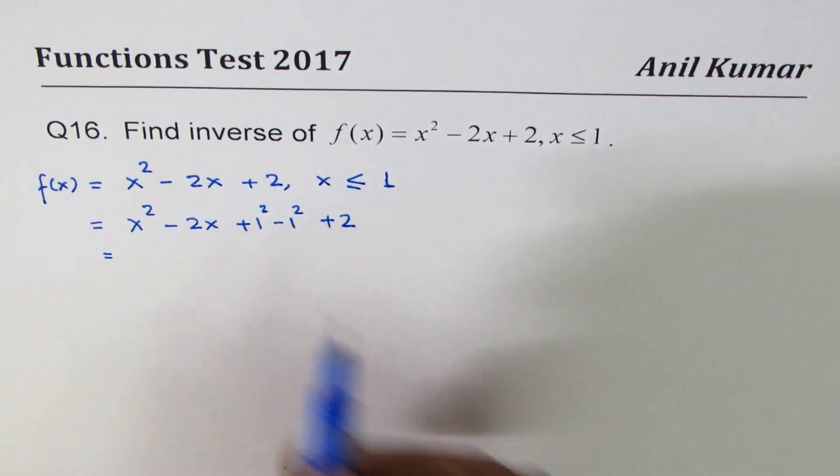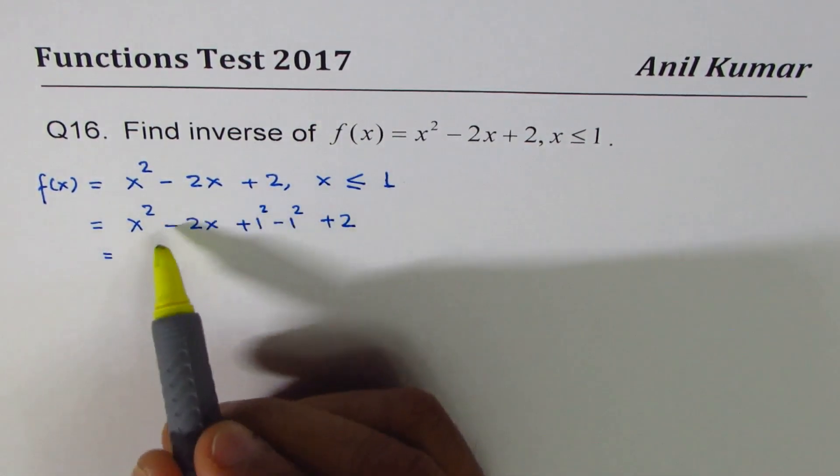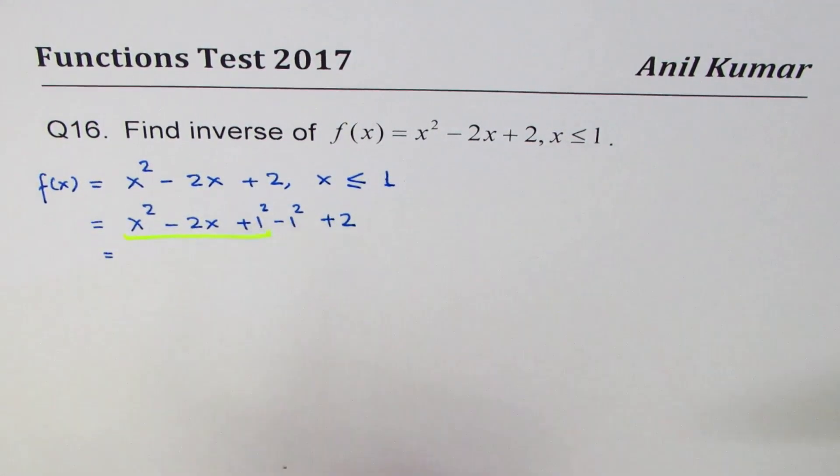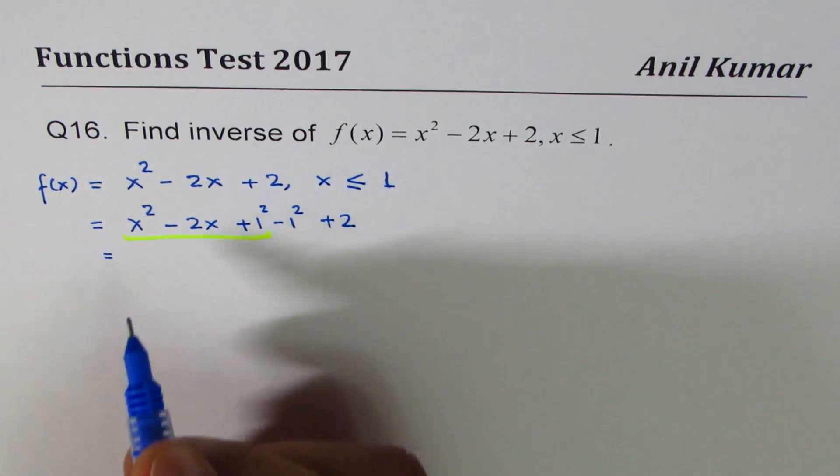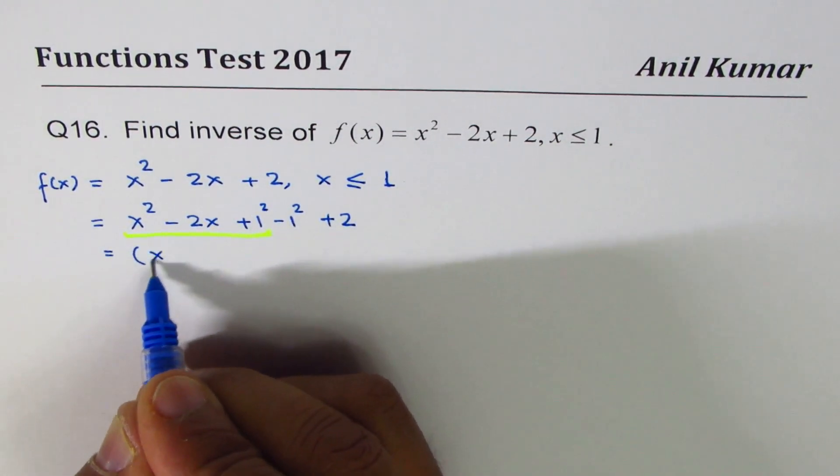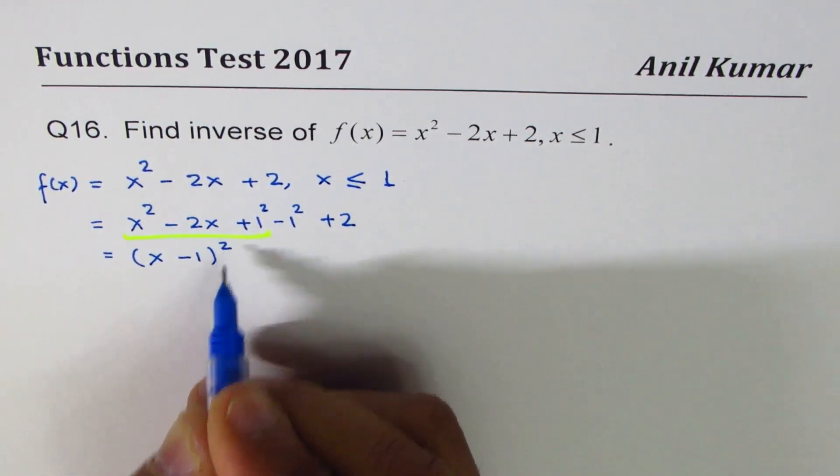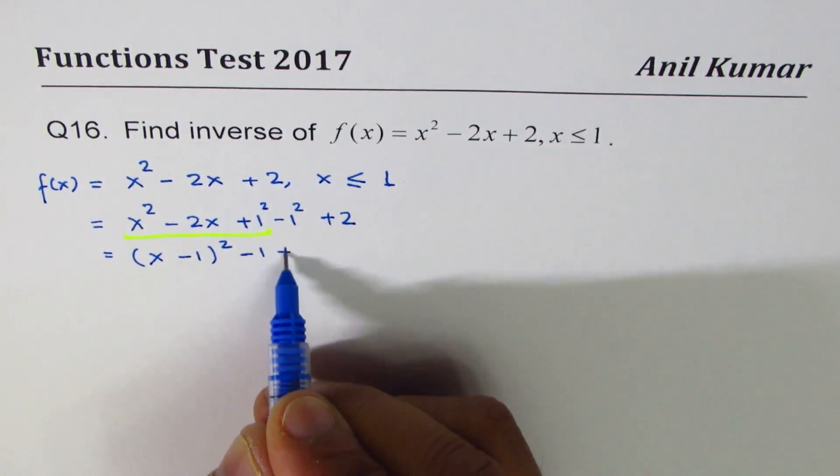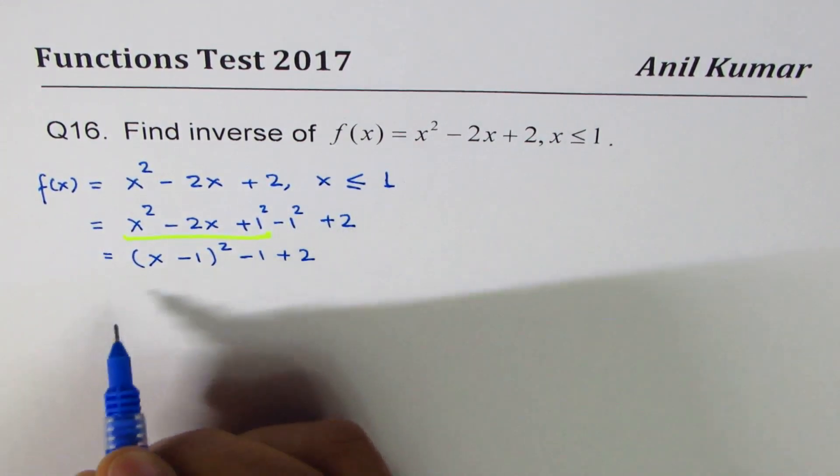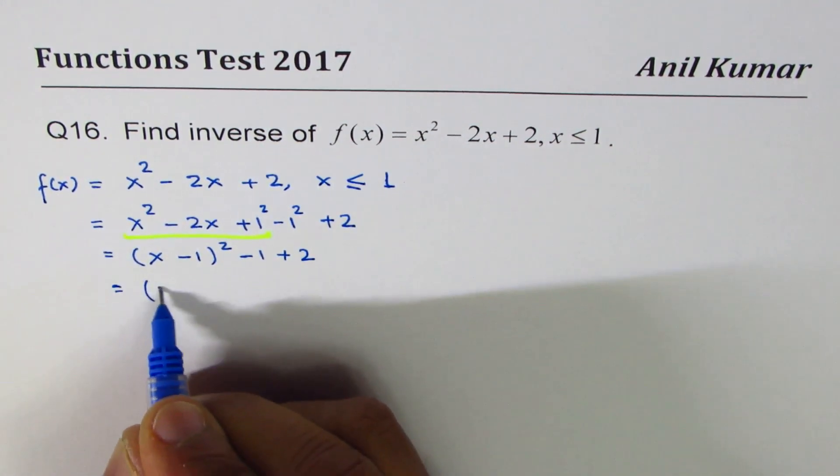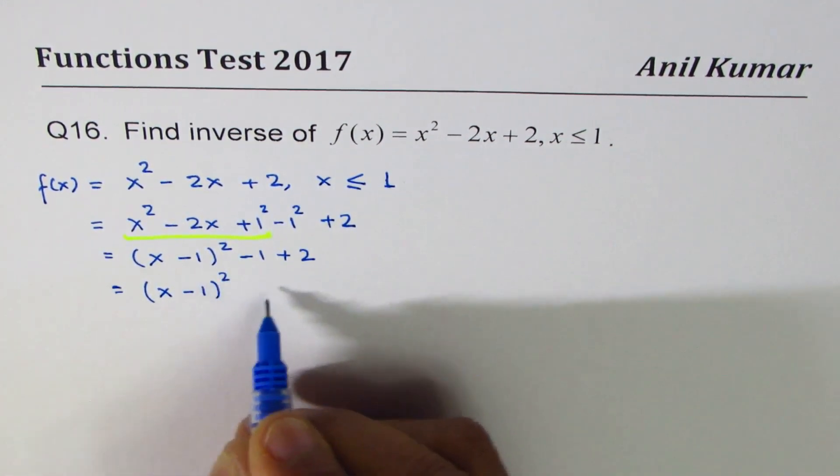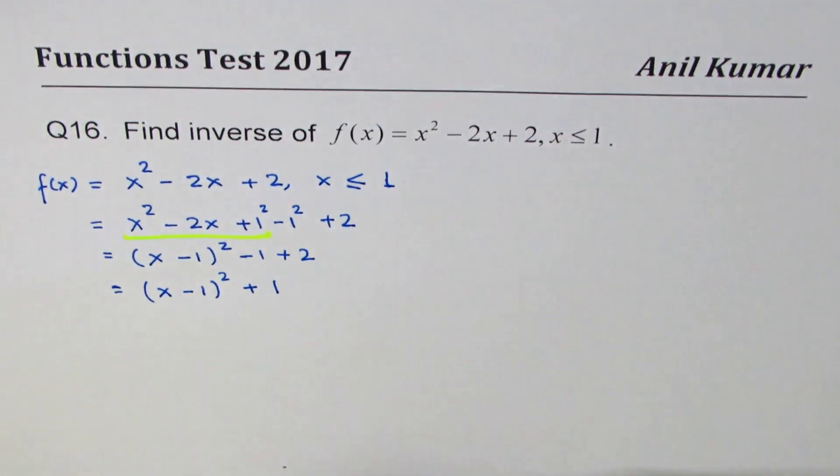The first three terms will form a perfect square. We can write them as (x - 1)² and then we have -1 + 2, which gives us (x - 1)² + 1.